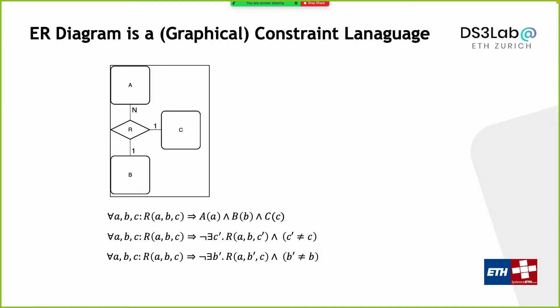So the ER diagram — the conceptual modeling part — is all about defining constraints, defining the information we have in the database, and defining the collection of valid database instances. When we do the translation, we take this conceptual model and translate it into a relational schema, thinking about constraints. We translate every entity set into relations, and the relationship R into another relation.